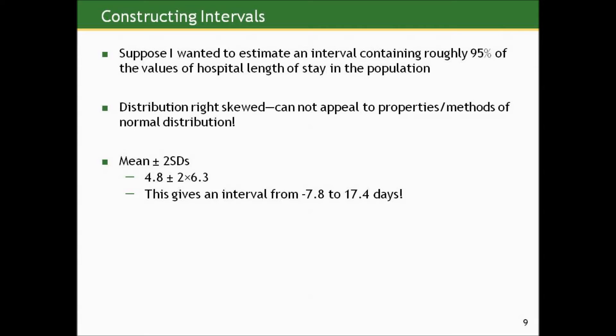Let's just see what happens if I do. Suppose I said, I know what to do. Just take the mean and add and subtract two standard deviations, because that's what John told me to do in the last section. So go ahead and do this. 4.8 is the mean, plus or minus 2 times 6.3 days. But if you do this, this actually gives an interval of negative 7.8 to 17.4 days.